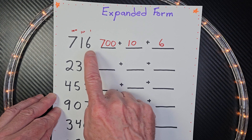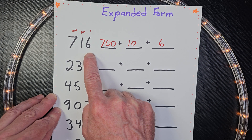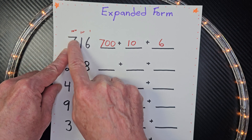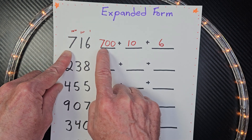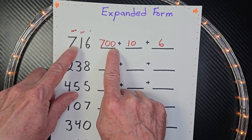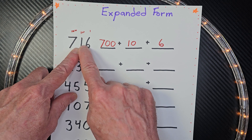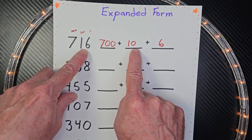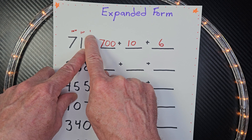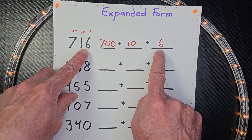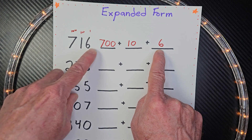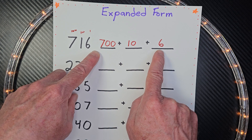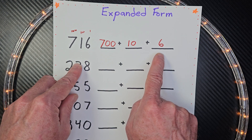All right, the first one is already done for you. The 7 right here is in the hundreds place, so I wrote it as 700. The 1 is in the tens place, so I wrote a 10. And the 6 is in the ones place, and I wrote it as a 6. So this would be 700 plus 10 plus 6. This is expanded form.